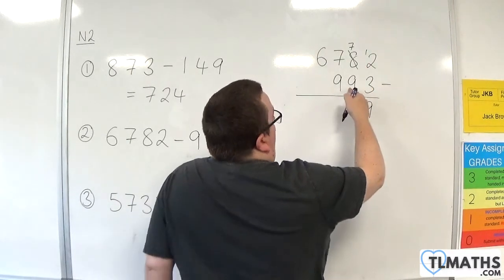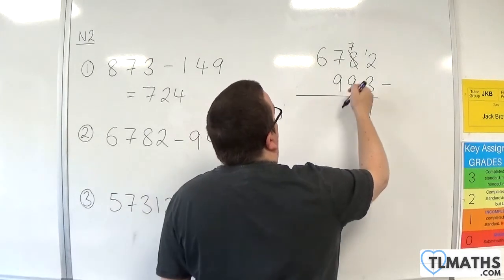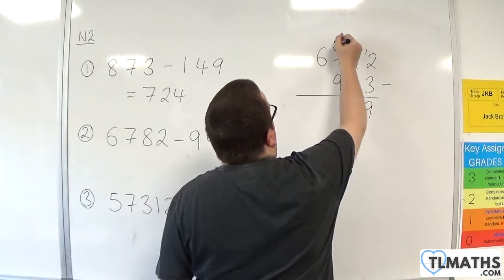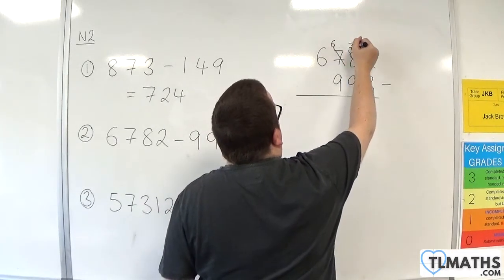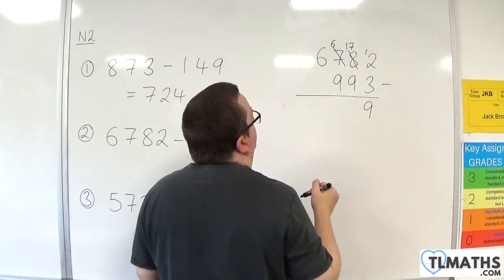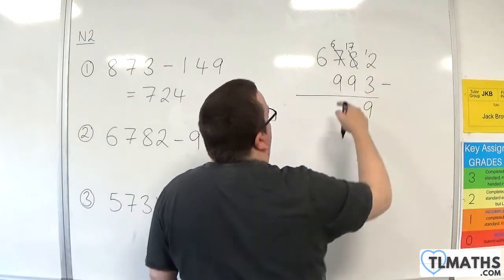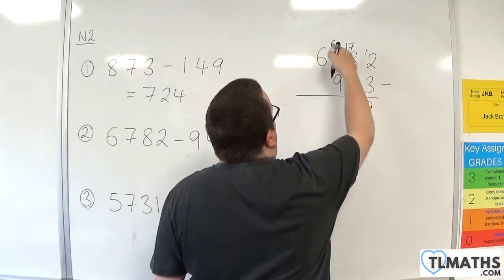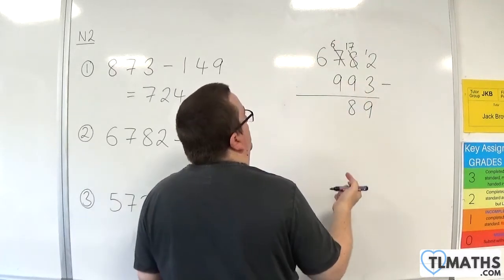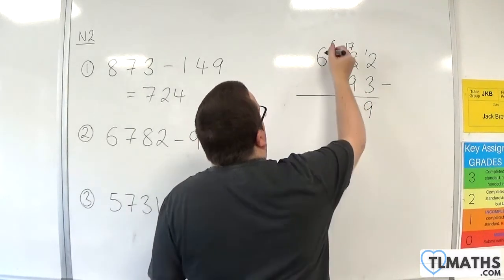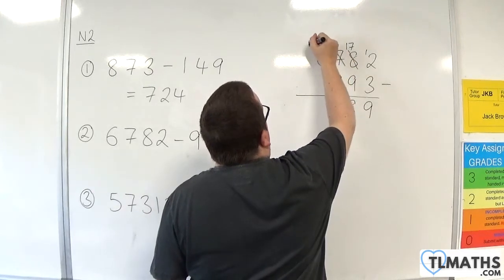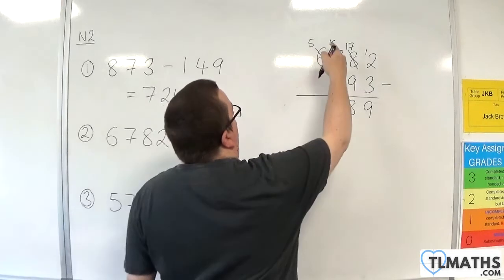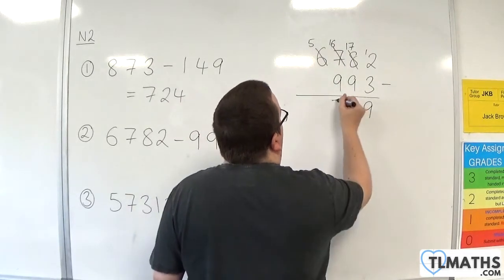7 take away 9 — I can't do without going into negatives, so I need to borrow 1 from the 7. So I cross it through, the 7 becomes 6 and the 7 becomes 17. 17 take away 9 will get me 8. 6 take away 9 I can't do, so I need to borrow 1 from the 6. So I cross it through, it becomes 5, and I've borrowed 1 so the 6 becomes 16. 16 take away 9 is 7.